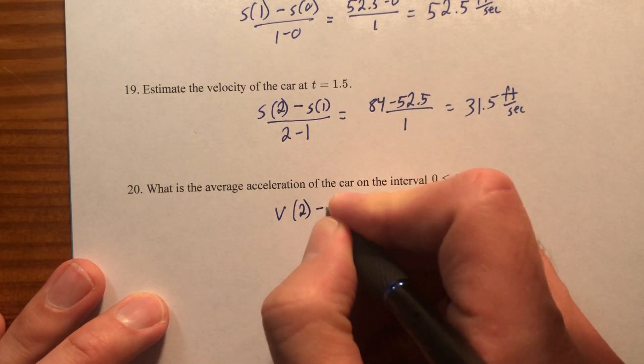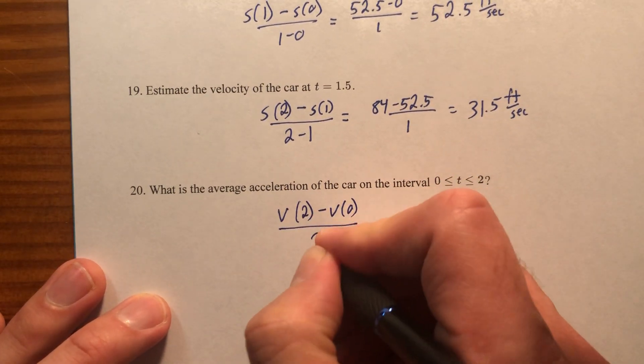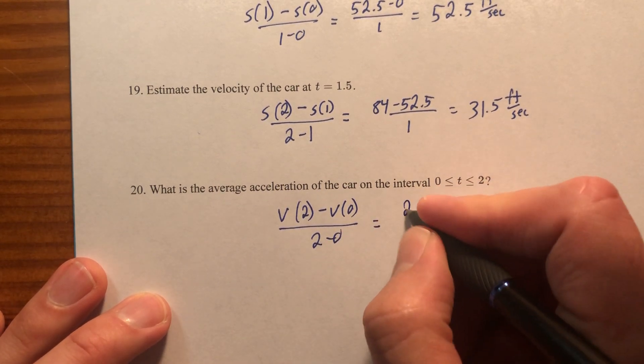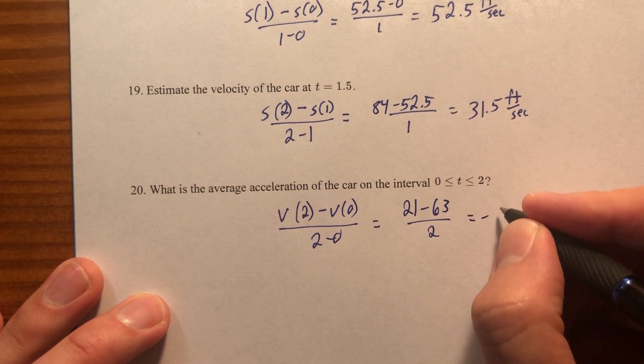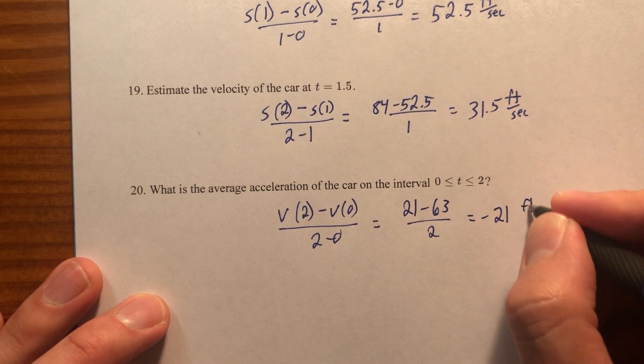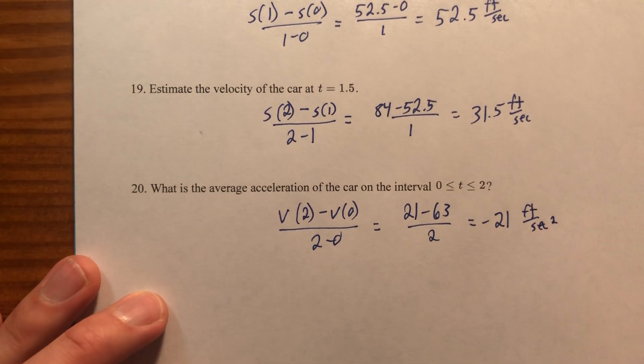So V of two minus V of zero over two minus zero. That's going to give me 21 minus 63 over two, which is negative 21 feet per second squared. No surprises there.